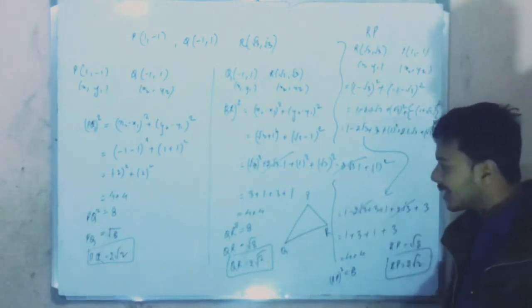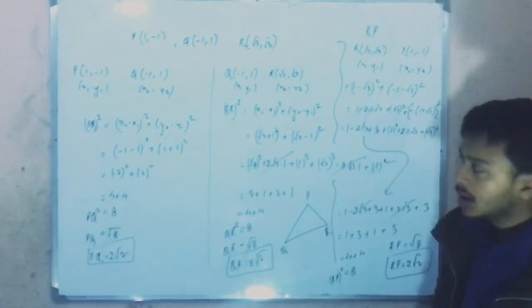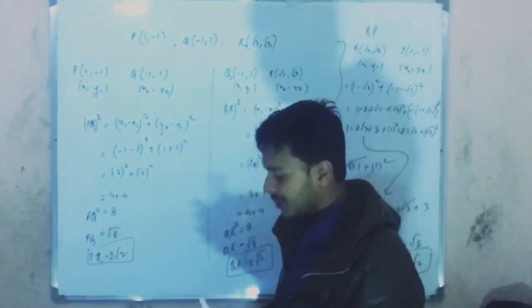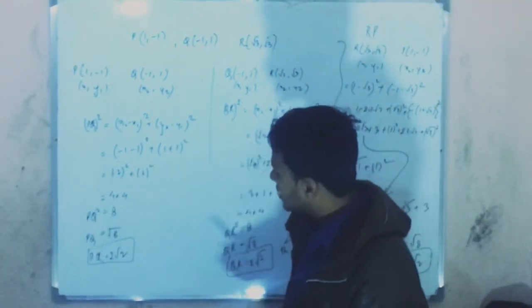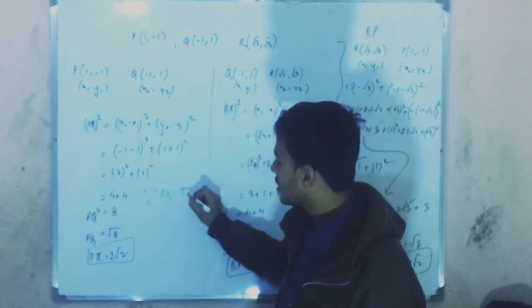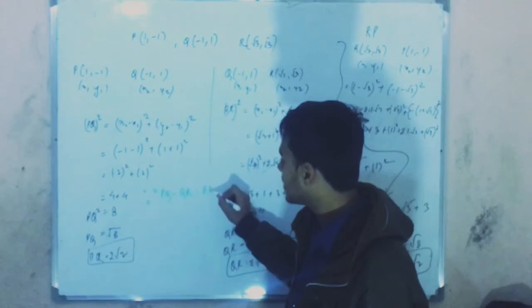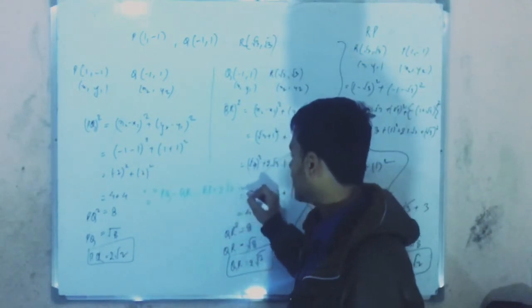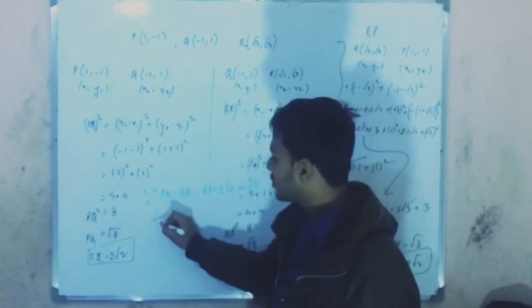Since all three sides are the same, PQ equals QR equals RP equals 2 root 2, this proves we have an equilateral triangle.